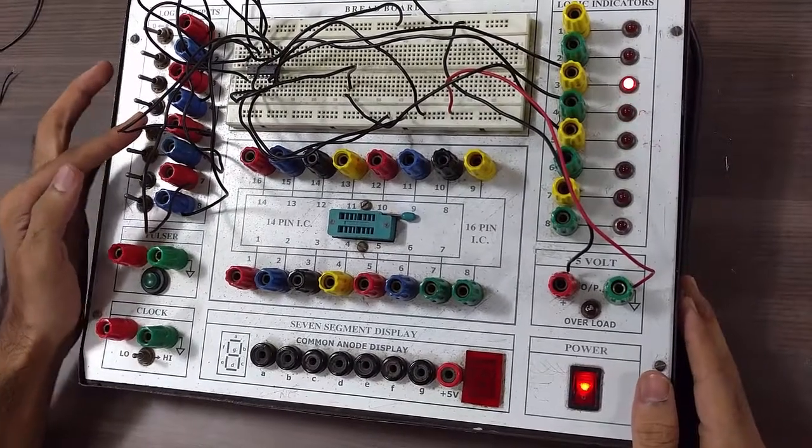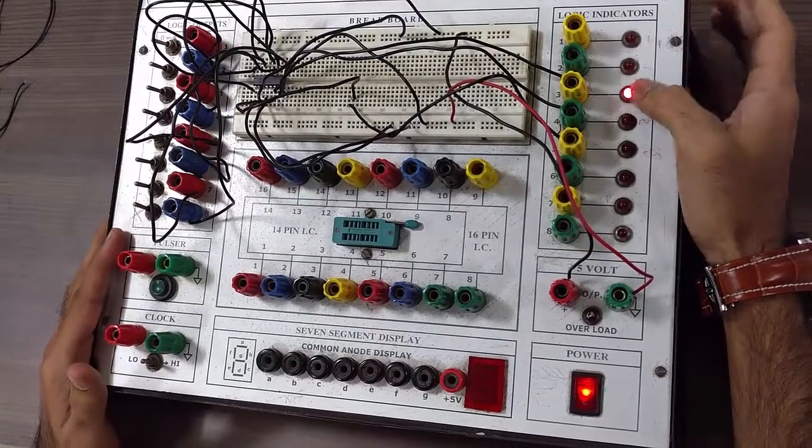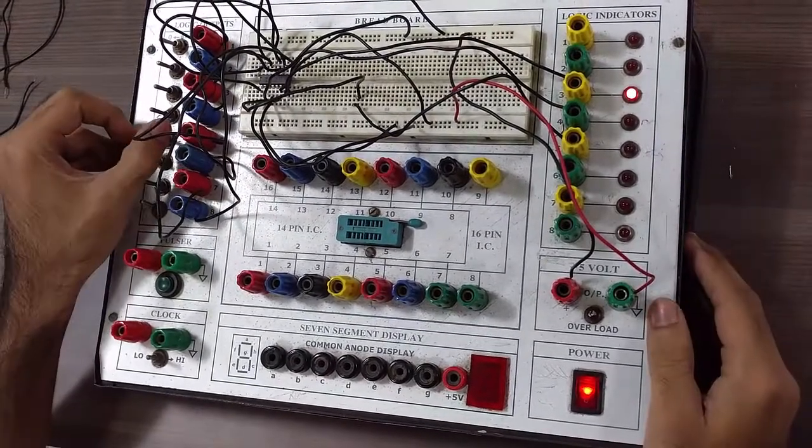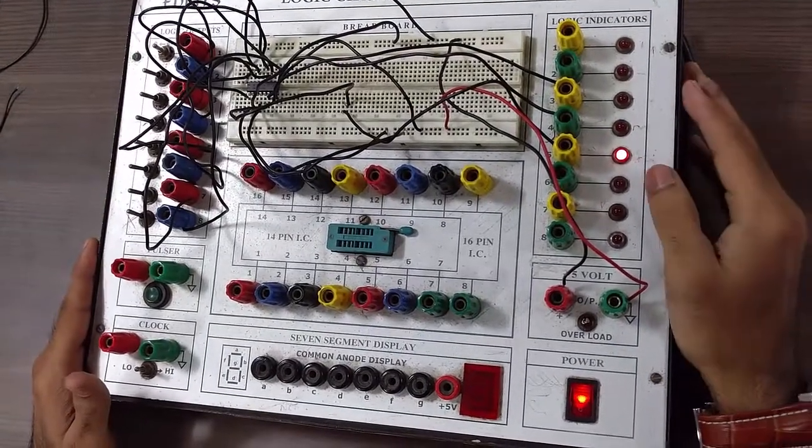Let's make A less than B. That is, we make B greater than 0. So we have made A less than B, so A is less than B and it is glowing. And now we will make A greater than B. So A greater than B and it is glowing. Hence, the output is verified.